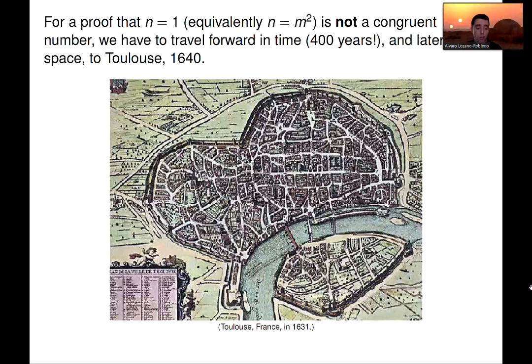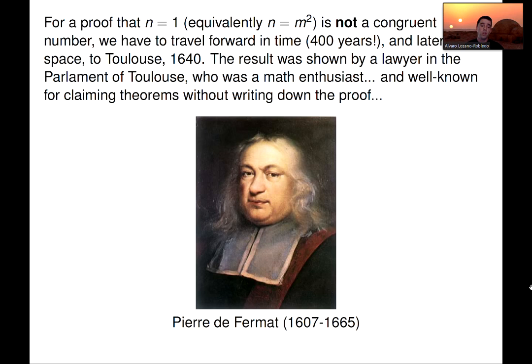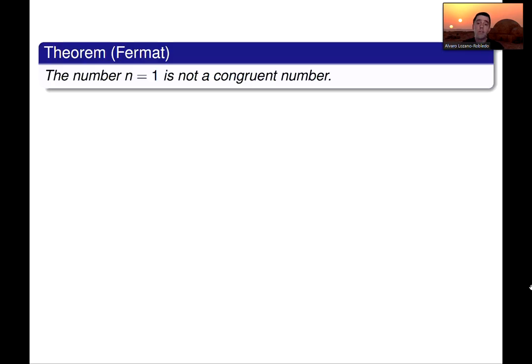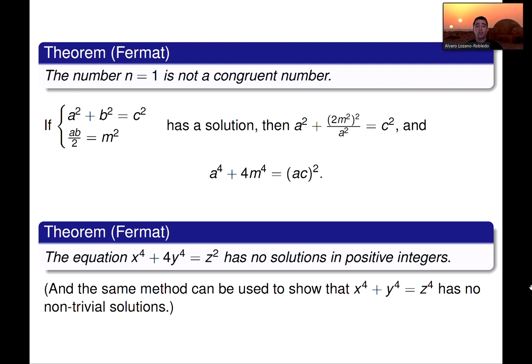We have to travel 400 years into the future to Toulouse, where a lawyer who was just a math enthusiast solved this problem. Another person that you probably know, who is Fermat, Pierre de Fermat, solved the problem that n equals 1 is not a congruent number, or he gave a good proof of this fact, which, by the way, if you work that out, is actually related to some other Diophantine equation, and that's the equation x to the 4th plus y to the 4th equals z squared, has no solutions in positive integers, which is actually related to, or the same method can be used to solve Fermat's theorem for n equals 4. So that's how this problem is actually related to Fermat's last theorem.